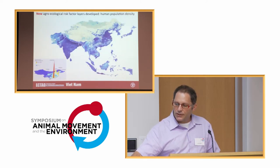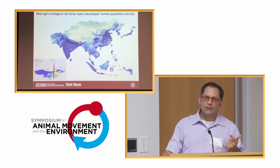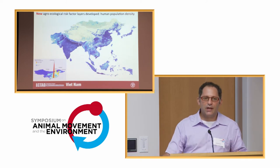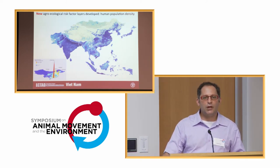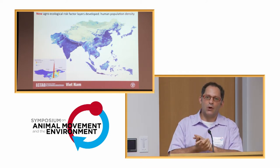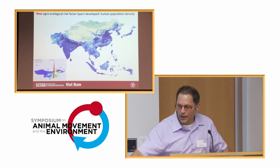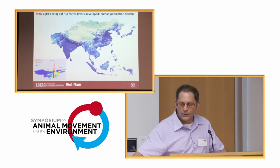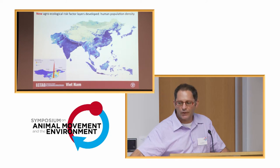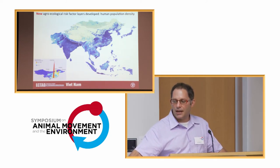Thinking back to where I showed high densities of pigs, ducks, and chickens — guess what? The same places have high densities of people. So now you start to bring together all the different hosts that might exchange viruses all into one area, this being particularly South and Southeast Asia as relatively high-risk areas for managing disease dynamics.